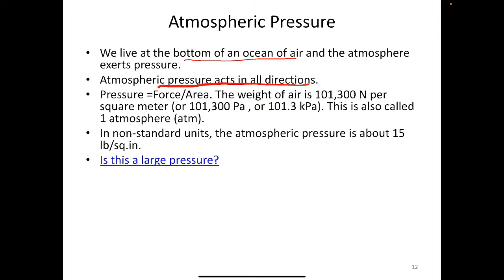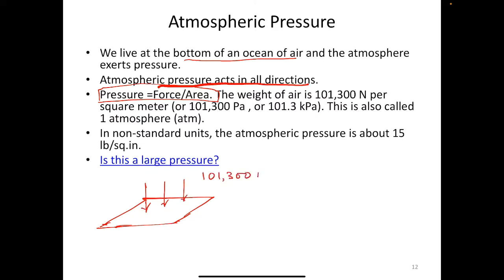What is the value of atmospheric pressure? The formula for pressure is force per unit area. If you hold up an area of one square meter, the atmosphere is going to exert a force of 101,300 newtons on that one square meter area. So the atmospheric pressure becomes 101,300 newtons divided by one square meter, which equals 101,300 pascals.